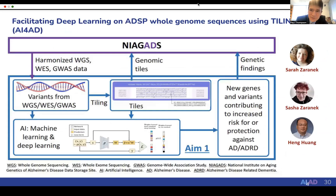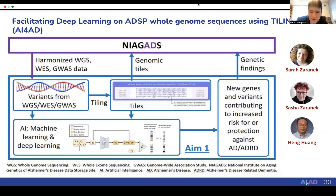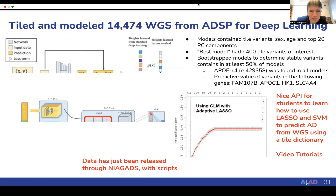To facilitate this, a major effort led by Sarah and Sasha Zoranik at Curie has divided 14,000 of the ADSP genomes into tiles—short genomic sequences that can be conveniently read into machine learning and deep learning methods to discover new genes and variants that contribute to risk for AD or protection against it. These tiles are being developed, used, and returned to NIAGADS for others to use.